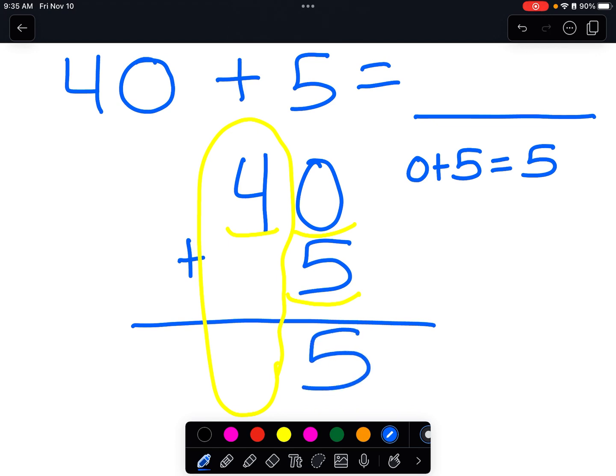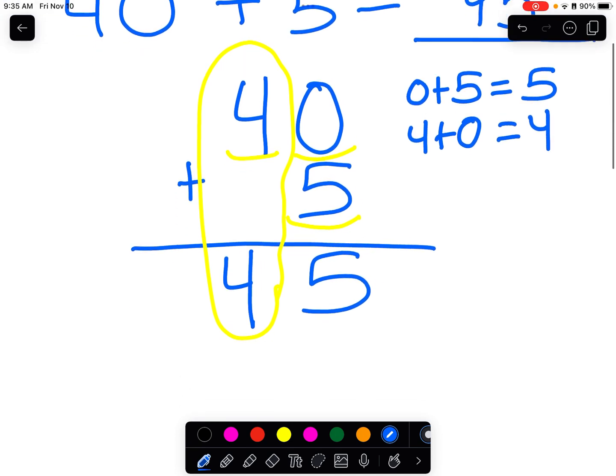And four plus nothing, or four plus zero, oh, I forgot to put the five here. Four plus nothing is four. Okay, four plus the imaginary zero is four. And there's our answer, 45. Let's do a few more examples.